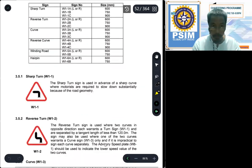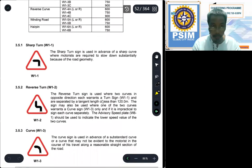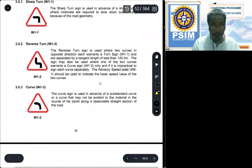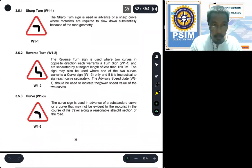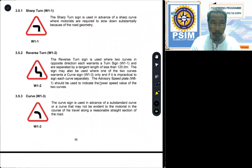Let us start with sharp turn. This is type W1-1, sharp turn. In this case, sharp turn to the left is used in advance of a sharp turn where motorists are required to slow down substantially because of road geometry. You have to slow down because the turn is sharp, almost 90 degrees.